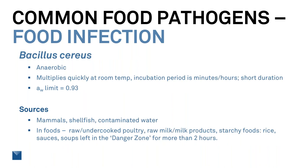Bacillus cereus is anaerobic. It multiplies very quickly at room temperature with an incubation time of minutes to hours, but doesn't last very long — it's mostly confused with the 24-hour stomach flu. Sources include mammals, shellfish, and contaminated water. In foods: raw and undercooked poultry, raw milk, and starchy foods like rice, sauces, and soups that have been left in the danger zone for more than two hours.